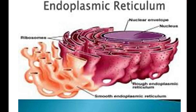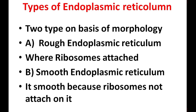Endoplasmic reticulum starts near the nucleus and extends throughout the cell. There are two types of endoplasmic reticulum on the basis of morphology — meaning, on the basis of shape. There is rough endoplasmic reticulum and smooth endoplasmic reticulum.